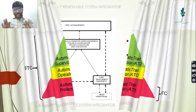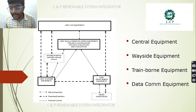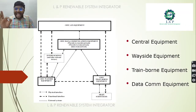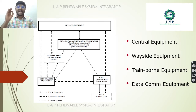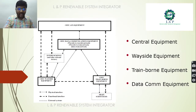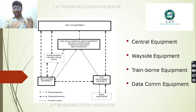The four important components of CBTC are: central equipment, wayside equipment, train-board equipment, and data communication equipment. As you can see in this block diagram, we have clearly provided the details of these four components.